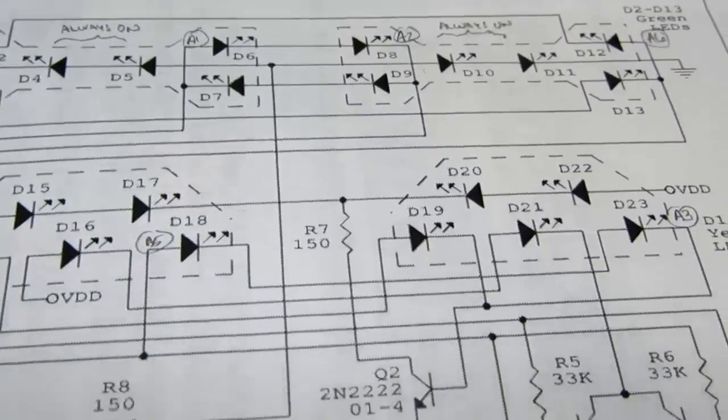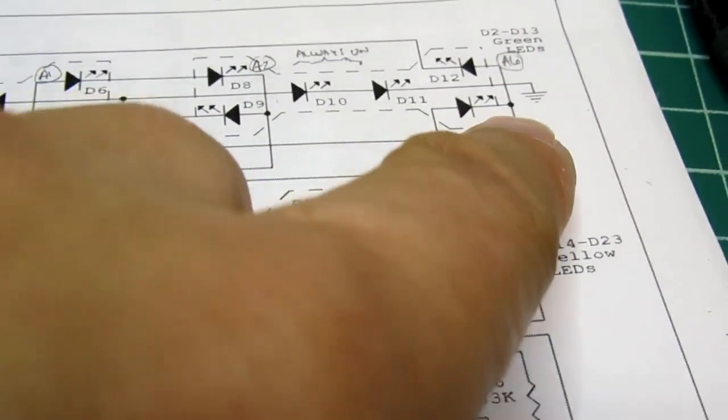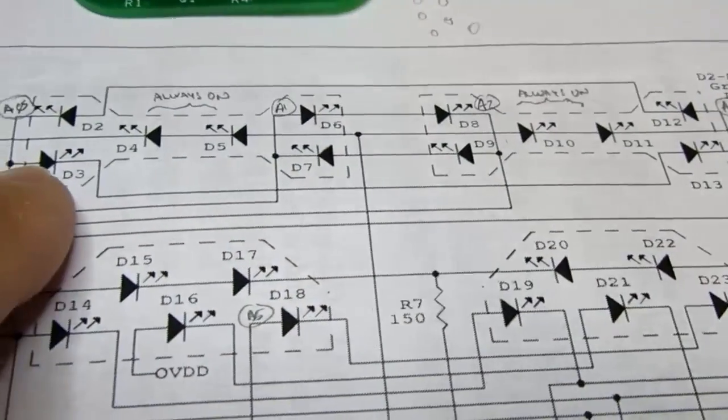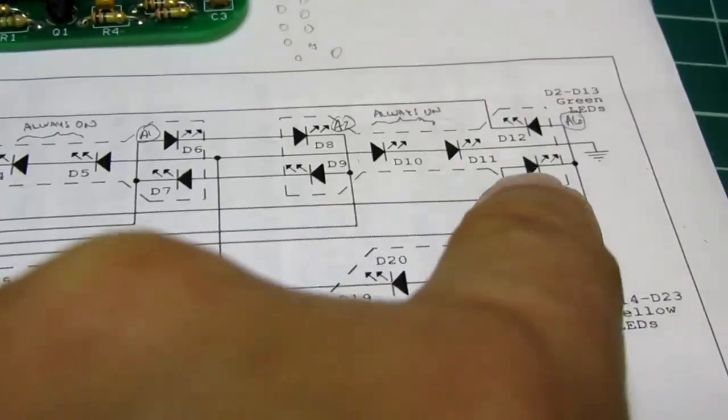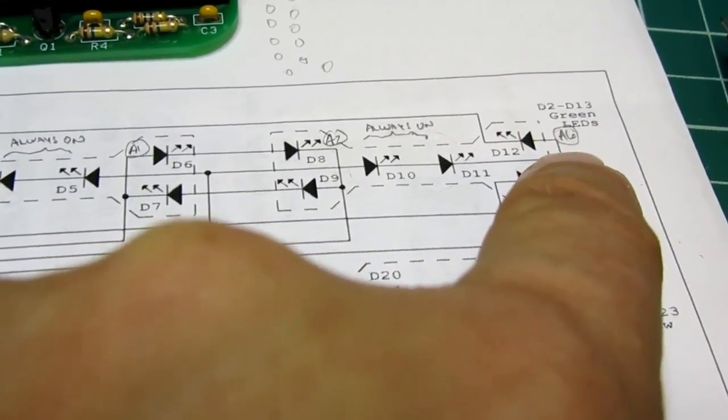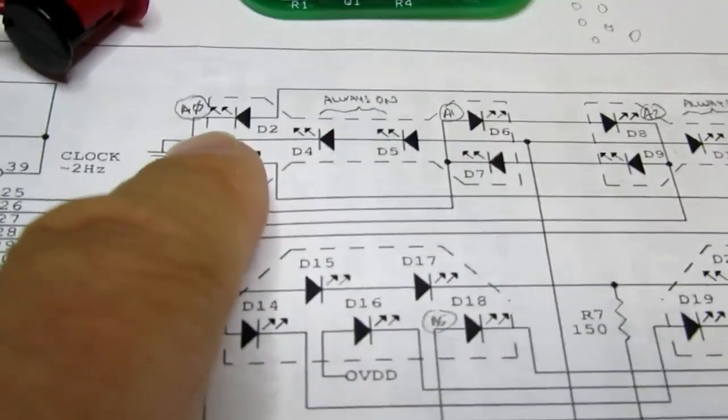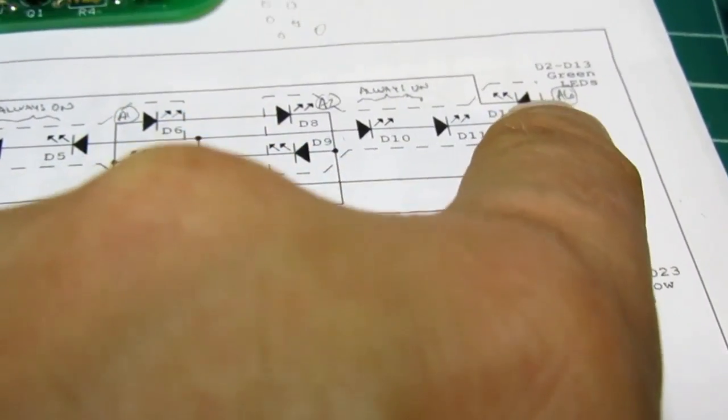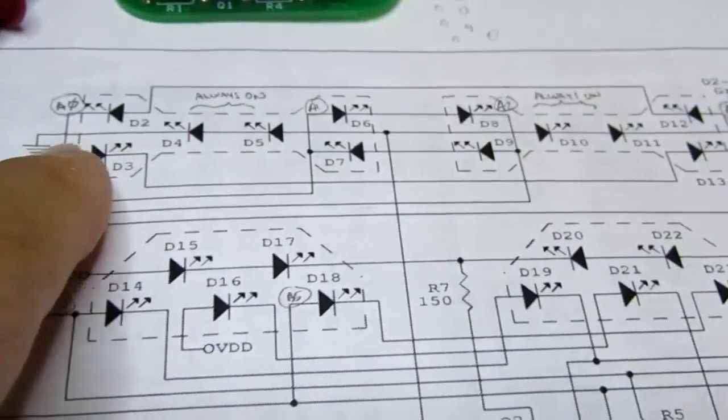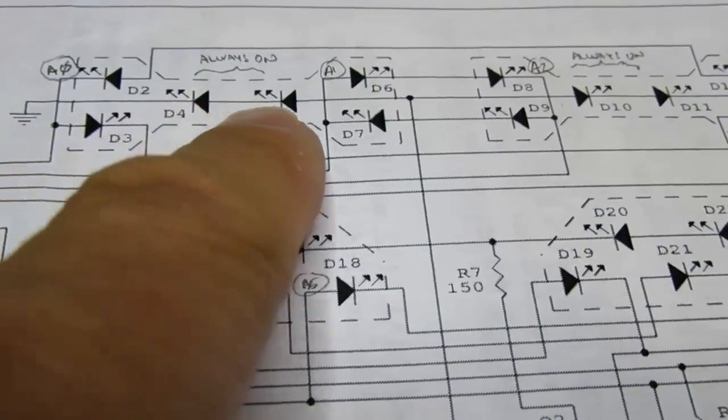If both of those address lines, 0 and 6, are the same—if they're both 1s or both 0s—then none of those 4 LEDs will turn on. But if one is higher than the other, for example, if A0 is 1 and A6 is 0, then the current will flow through these lower outer eyebrows. If it's the other way around, with A6 being 1 and A0 being 0, then the current will flow through the upper outer eyebrows and turn those on.